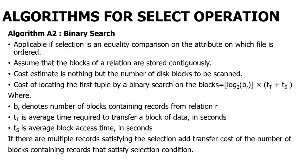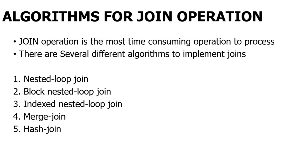TT is nothing but the average block access time — that is, transfer of a block of data — and TS is the seek time. Both are measured in seconds, where BR is the number of blocks containing the records from the relation. This is how you will measure cost with the help of binary search.